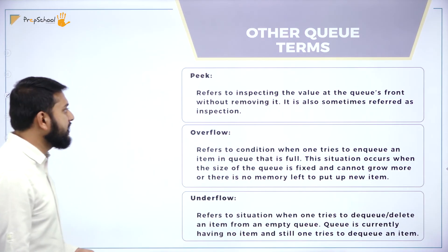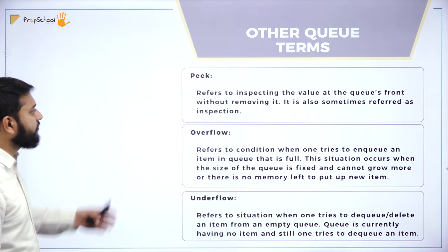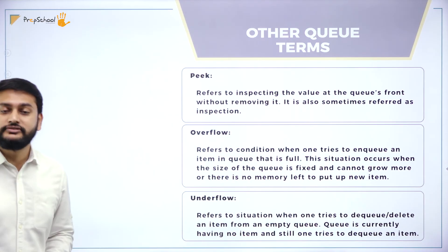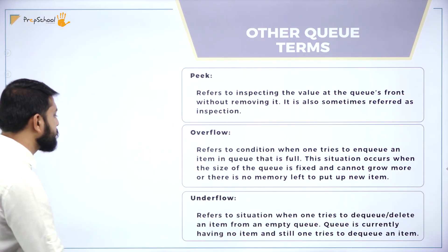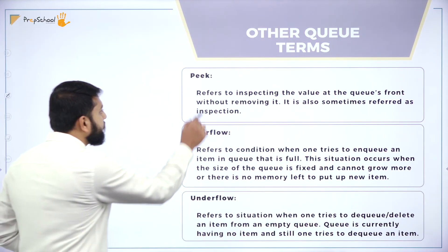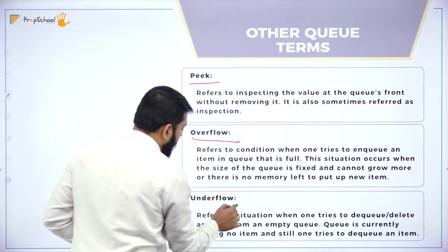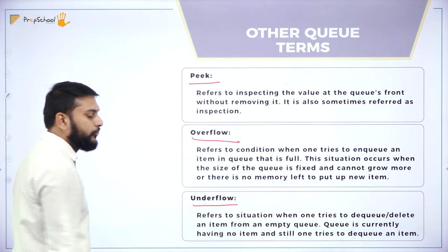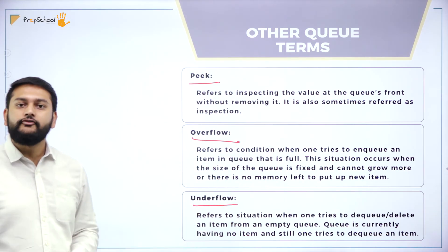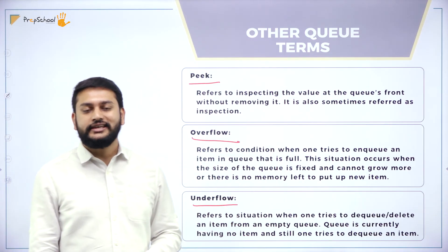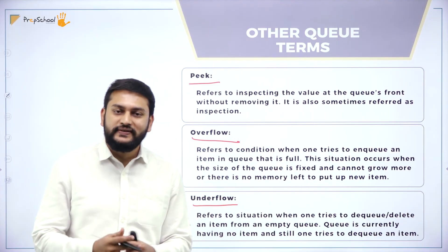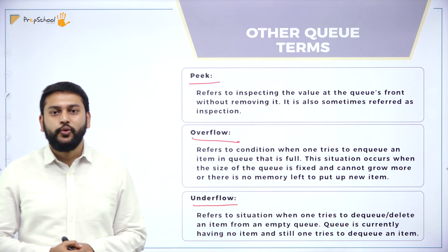Rules followed by the queue: The data can only be removed from the front end of the queue — the removal of an element is called the DQ operation. The new data element can be added to the rear end of the queue — the insertion of an element is what we call the NQ operation. Along with that, we have peak, overflow, and underflow, which were also discussed in the previous session.